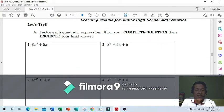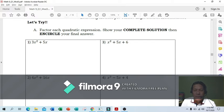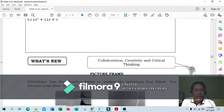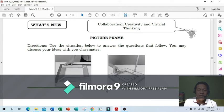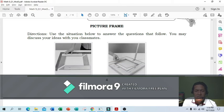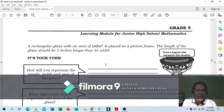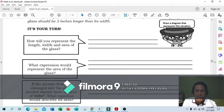Okay, let's try. You will answer this practice. I won't check it but you need to do this. Next: Collaboration, Creativity, and Critical Thinking. Picture frame: Use the situation below to answer the questions that follow. You may discuss your ideas with classmates through GC or Zoom. A rectangular glass with an area of 168 square inches is placed on a picture frame. The length of the glass should be 2 inches longer than its width. How will you represent the length and area of the glass?